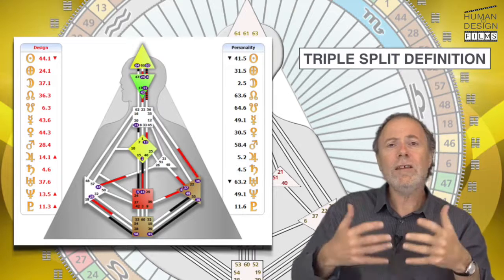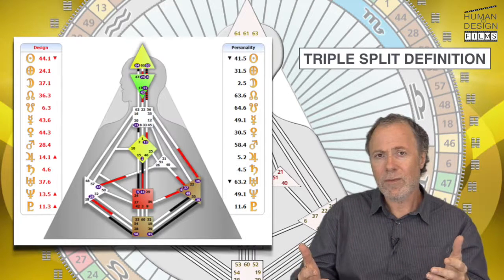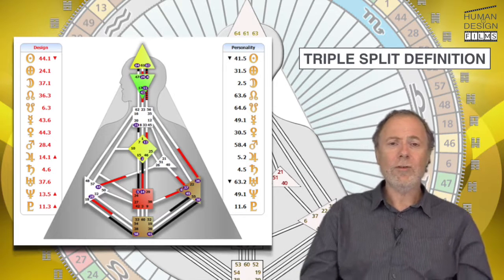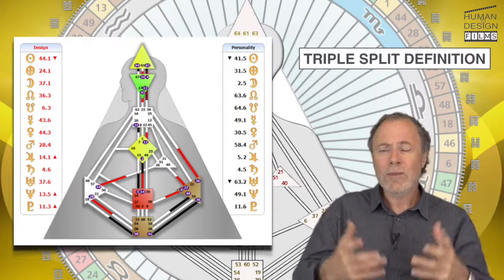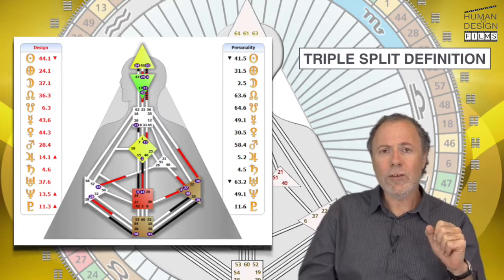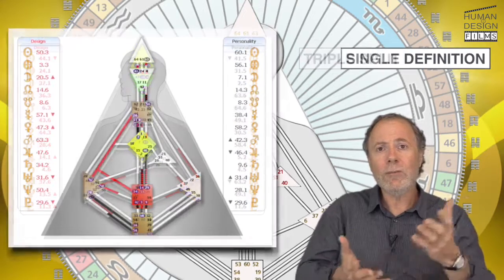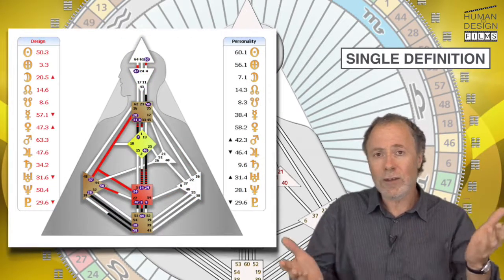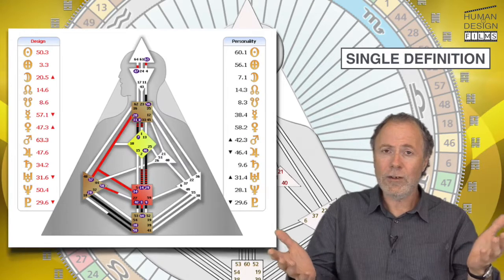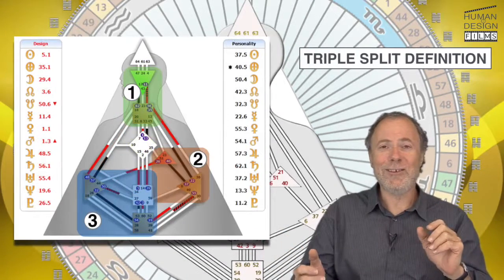It means you need to give yourself time. You can't simply go through life expecting to be able to make quick decisions the way someone who is joined up completely in their design. A single definition. You're not a single definition. You're a triple split definition.